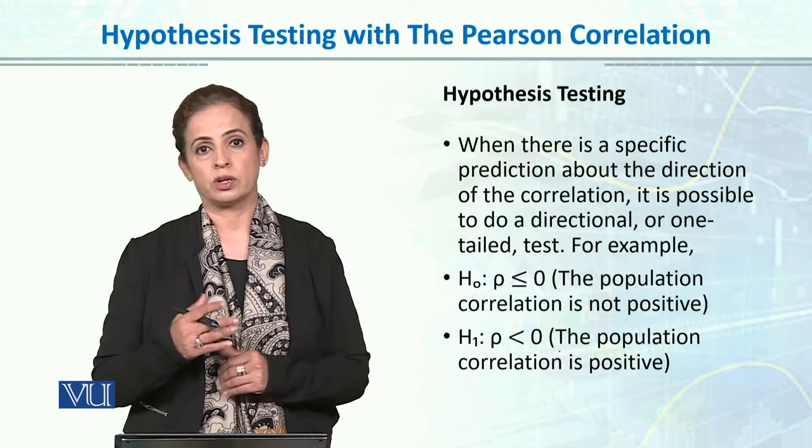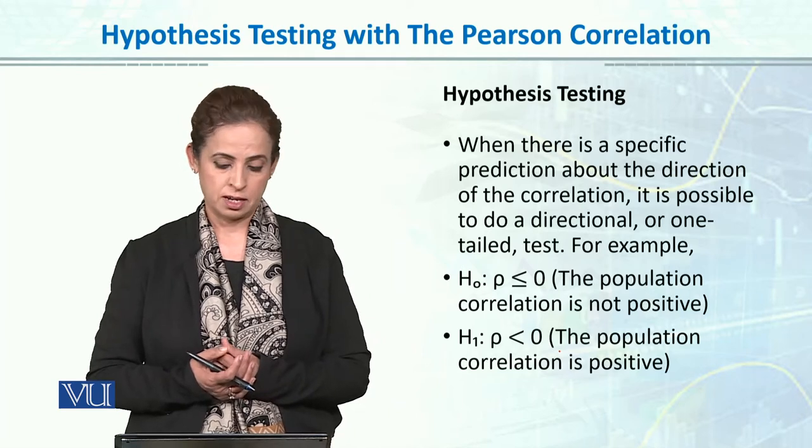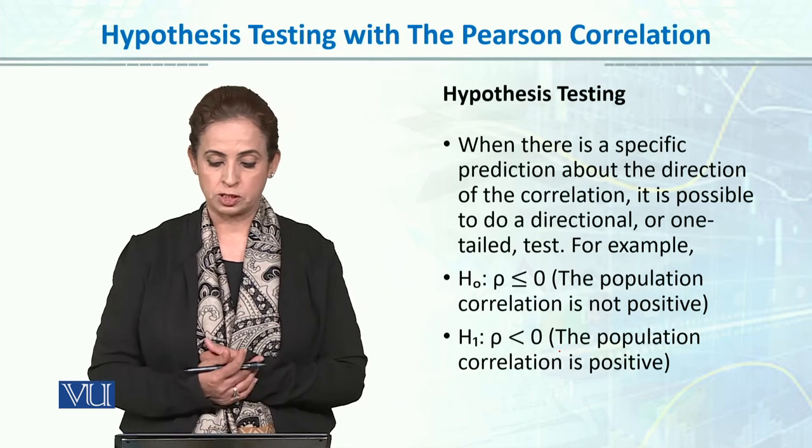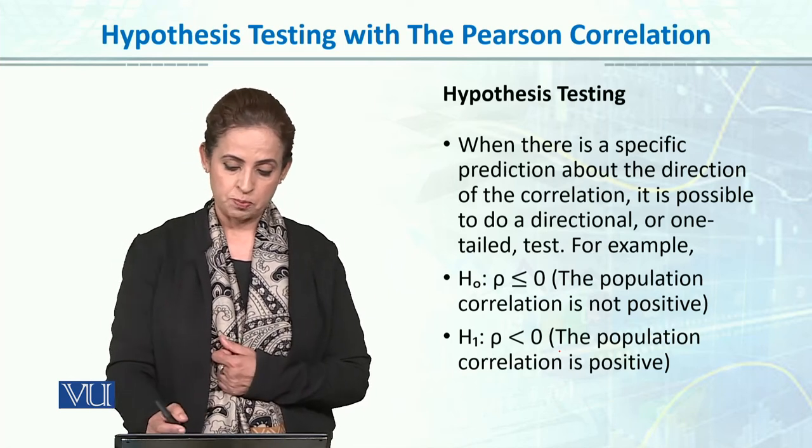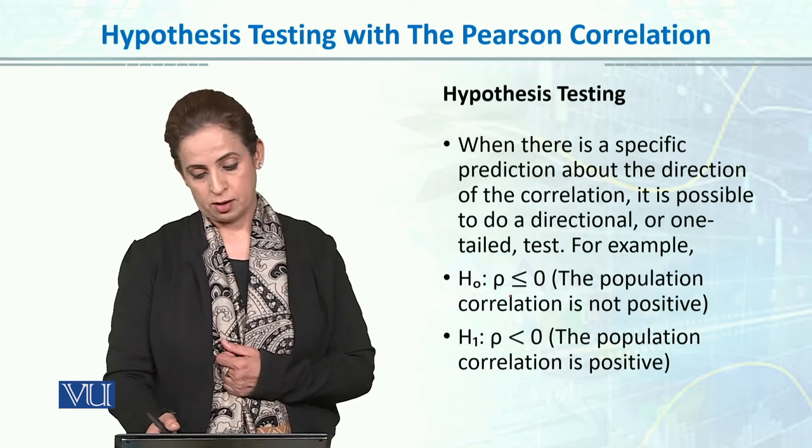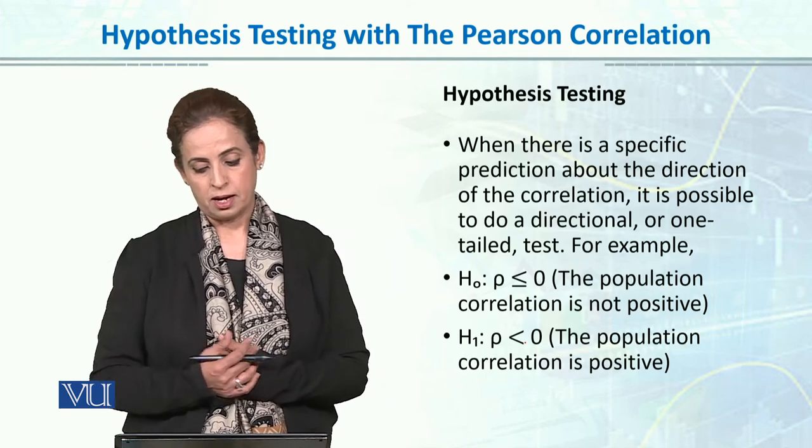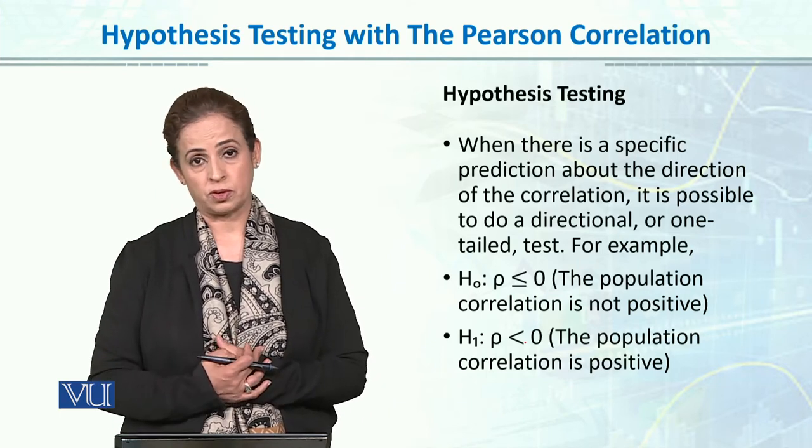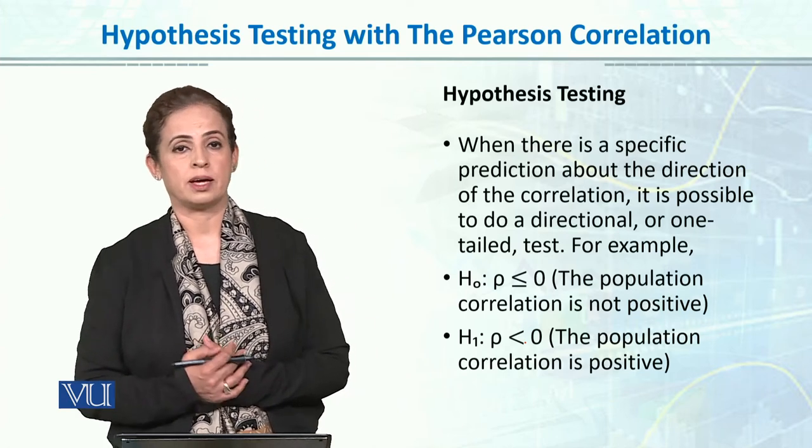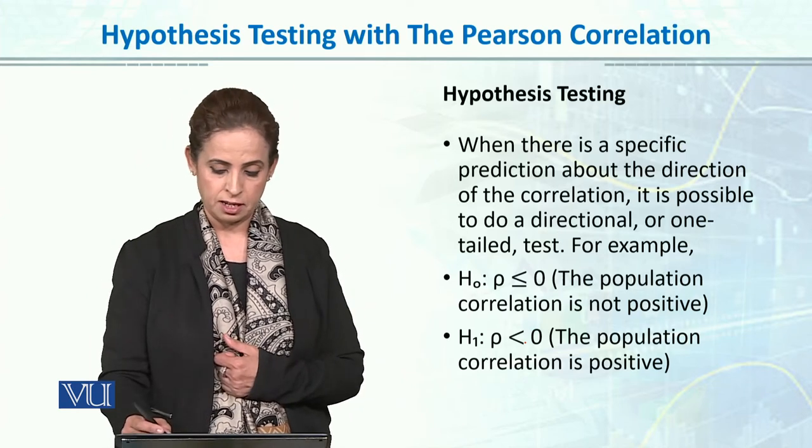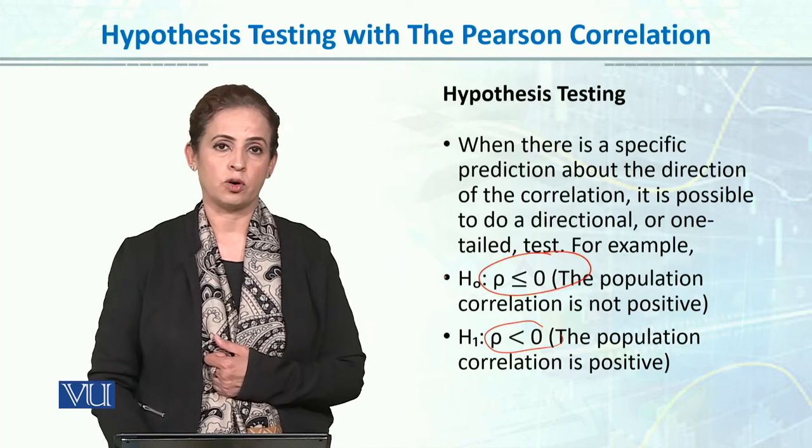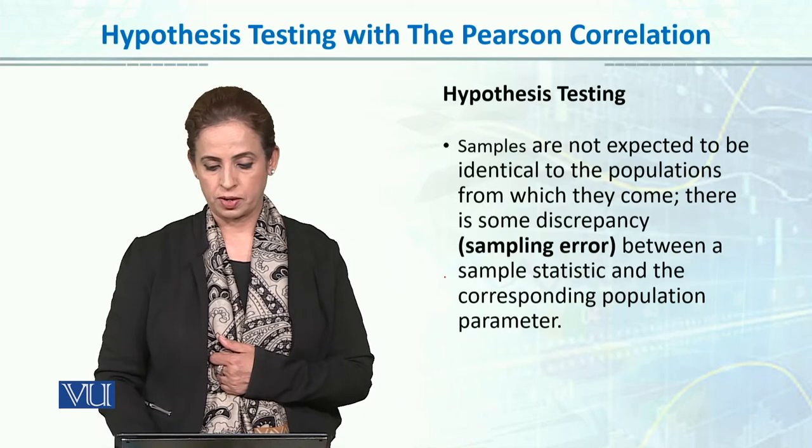When there is a specific prediction about the direction of the relationship, it is possible to do a directional hypothesis. We can say ρ is smaller than zero or ρ is greater than zero, depending on which two variables you're examining. For directional hypothesis, the null hypothesis might state the population correlation is not positive (ρ ≤ 0), while the alternative states there is positive correlation (ρ > 0). We can write it in words, but statistically we write hypotheses with notation and symbols.